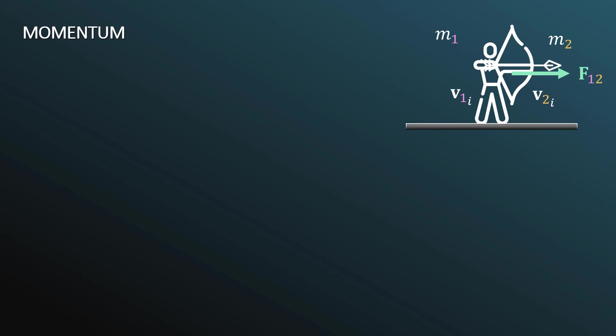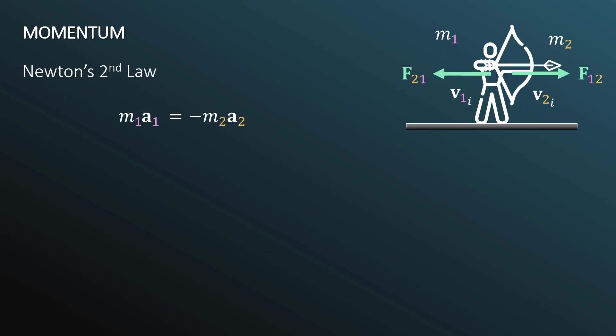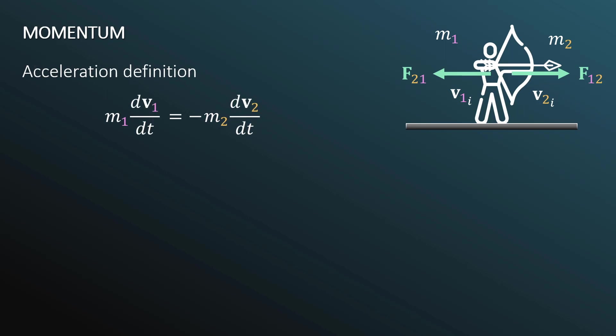But because of Newton's third law, we know that the arrow also applies a force to the archer, but the force is to the left. Because of Newton's third law, these forces are equal in strength but opposite in direction — hence the negative sign. We know from Newton's second law that we can write the total forces as MA. So we have M1*A1 equals M2*A2. The acceleration is the change in velocity over the change in time.